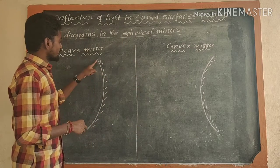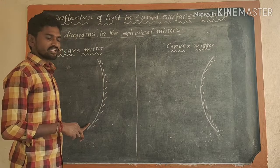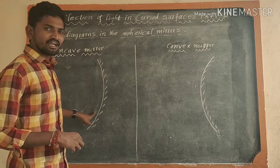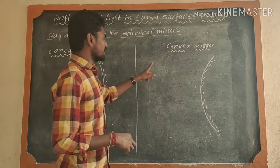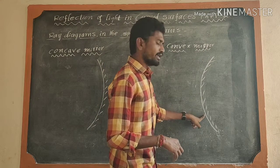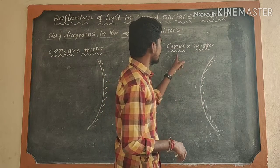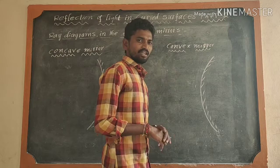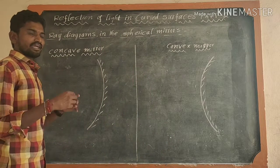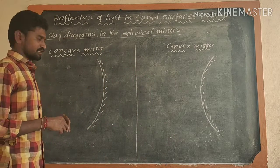What is a concave mirror? The reflecting surface went in the inward direction — such type of mirror is called a concave mirror. And for a convex mirror, the reflecting surface went in the outward direction — such type of mirror is called a convex mirror. Today I will explain the ray diagrams in both concave and convex mirrors.